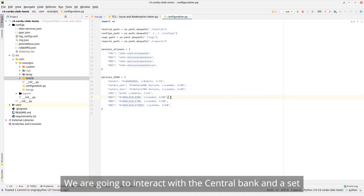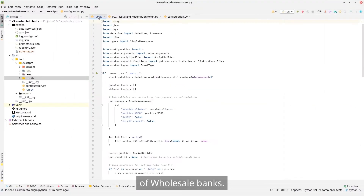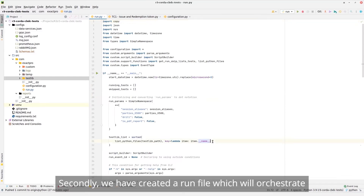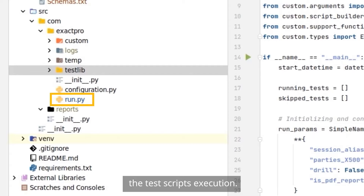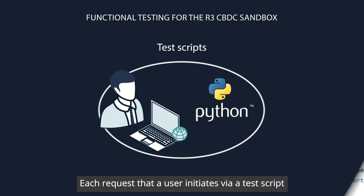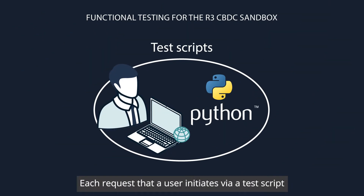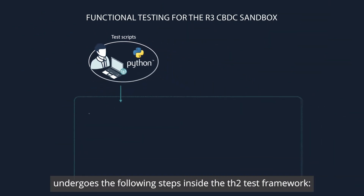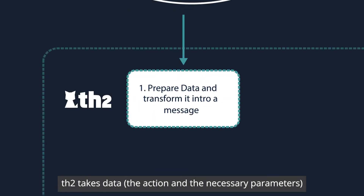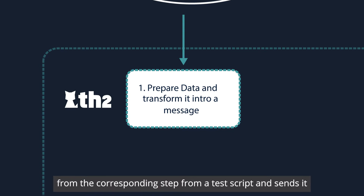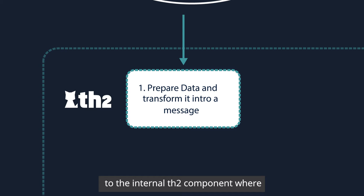We are going to interact with a central bank and a set of wholesale banks. Secondly, we have created a run file which will orchestrate the test script's execution. We are going to run four test scripts. Each request that a user initiates via a test script undergoes the following steps inside the TH2 test framework: TH2 takes data, the action, and the necessary parameters from the corresponding step from a test script and sends it to the internal TH2 component where a message will be constructed.